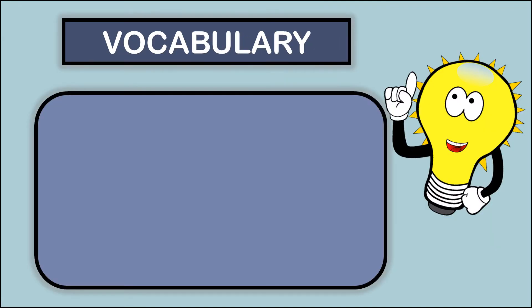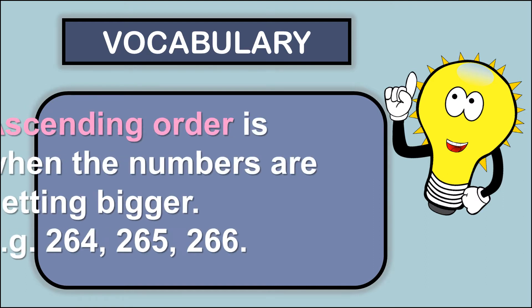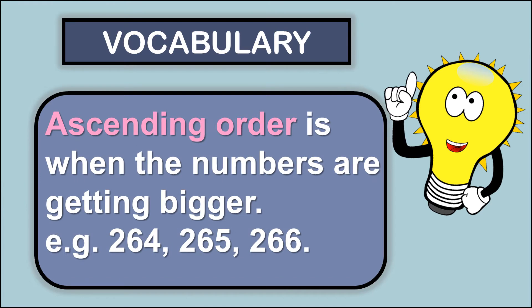We are going to jump right into some vocabulary. Ascending order is when the numbers are getting bigger. Example: 264, 265, 266.